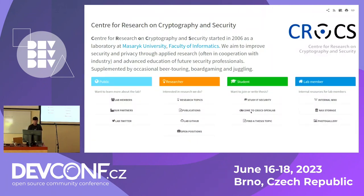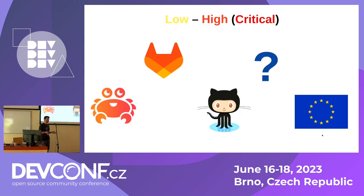Right now I'm doing a PhD at a different faculty. So if you're confused about the venue — there are two faculties in Brno and the other one is my alma mater. I ended up doing bug bounties roughly two years back during COVID. I've worked on various programs and companies, so you might recognize GitLab or GitHub, and maybe you don't recognize some others.